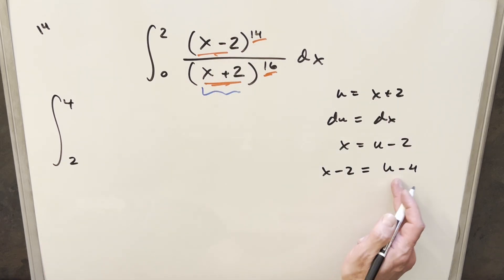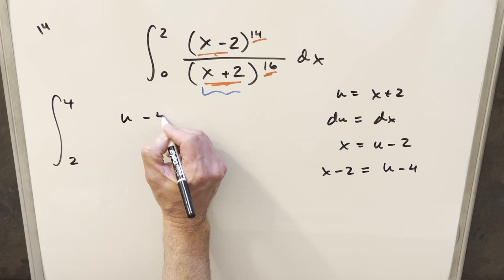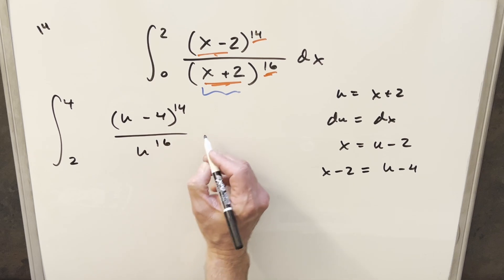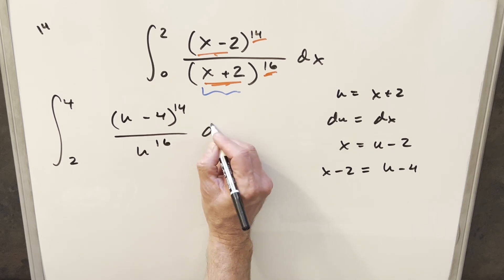Then our x minus 2 value, that's going to become this u minus 4, so we're going to have u minus 4 to the 14th. This is just u, so we're going to have u to the 16th, and then our dx is just du.